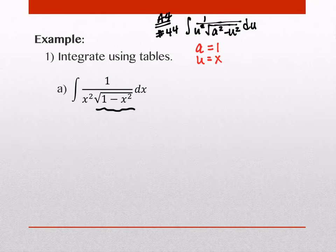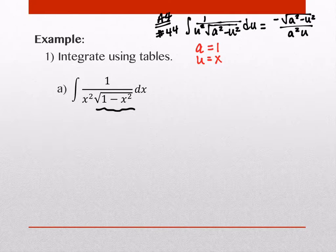So, this is a really simple substitution step. And it tells you on this page what the result should be. It should equal negative the square root of a squared minus u squared over a squared u plus c. So, this whole lesson is just figuring out which formula it matches, and then it gives you the answer. The most you ever have to do is a simple u substitution or a value identification.